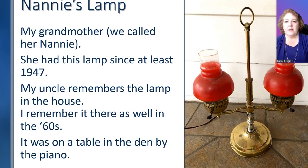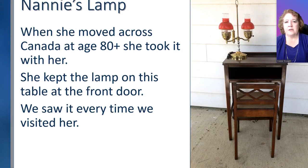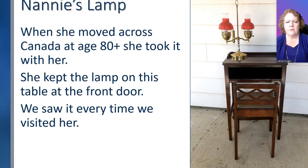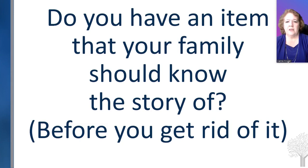This is my grandmother's lamp — we called her Nanny. She had this lamp since at least 1947. My uncle remembers it. I remember it in the 60s. It was on the table in the den. My grandmother then moved from Ontario all the way over to British Columbia, and she took the lamp with her and this table and chairs. When we walked into her house every time, there was this lamp and chair as you walked in — it was in the entryway. And you know what? I never asked her why that lamp was important, where she got it. Obviously she liked it, but what's the history behind it? Or the table and chairs? Do you have an item in your family that you should ask somebody about the background history before you get rid of it?